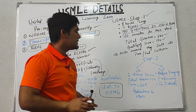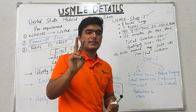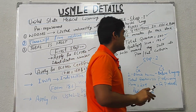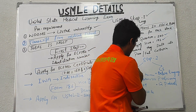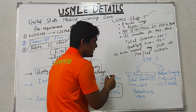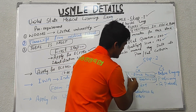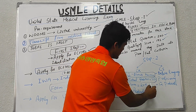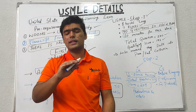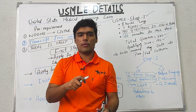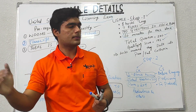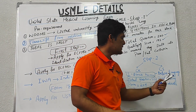Step 2 is divided into two parts: CK (Clinical Knowledge) and CS. In CK, we have one block of 60 minutes, 350 total questions, and a passing score of 209. We have clinical questions from pediatrics and other clinical subjects.